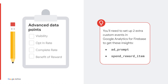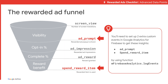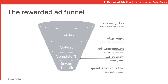Now let's move on to the Advanced Metric Checklist. Please note that you'll need to implement two additional custom events to see these data points. The custom events are Ad Prompt and Spend Reward Item. In order to see these custom events on the Firebase Dashboard, you need to use the function mFirebaseAnalytics.logEvent to track them. After the implementation, you'll be able to see the transition funnel of Rewarded Ads.